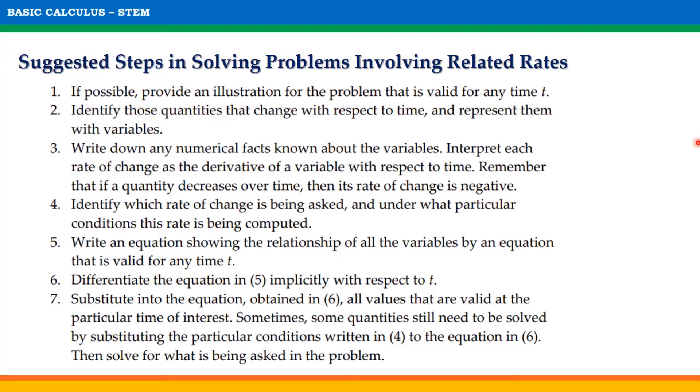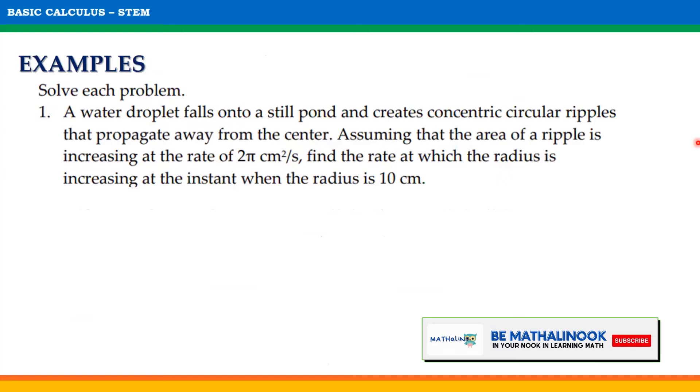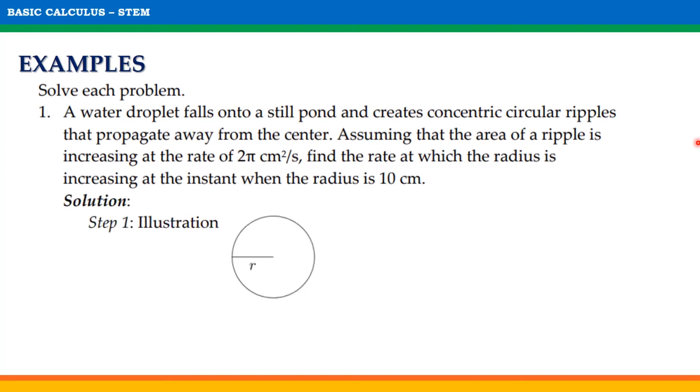Let us apply these steps in solving some related rates problems. For the first example, a water droplet falls onto a still pond and creates concentric circular ripples that propagate away from the center. Assuming that the area of a ripple is increasing at a rate of 2π centimeters squared per second, find the rate at which the radius is increasing at the instant when the radius is 10 centimeters. For step 1, this is our illustration of a circle with radius r.